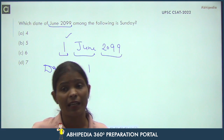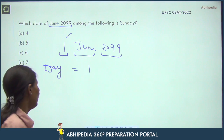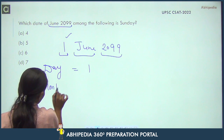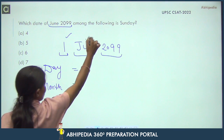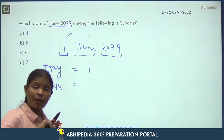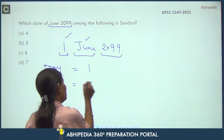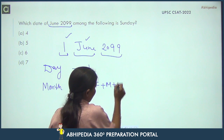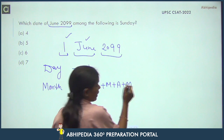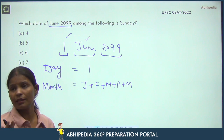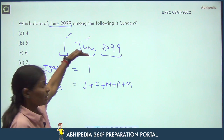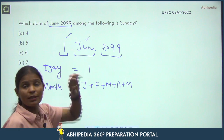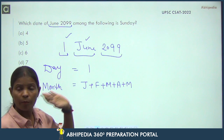Now for the month: since June is currently running, we consider only up to May - that means January, February, March, April, and May. January has 31 days → 3 odd days. February has 28 days → 0. March → 3. April has 30 days → 2. May → 3. Total so far: 3+0+3+2+3 = 11.